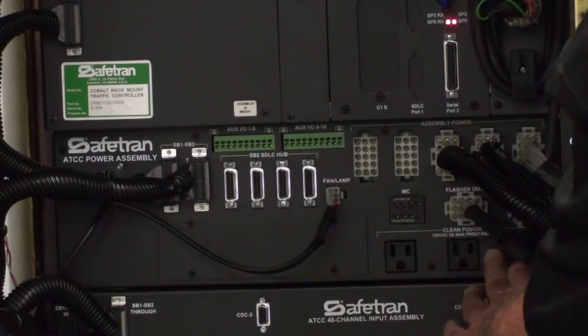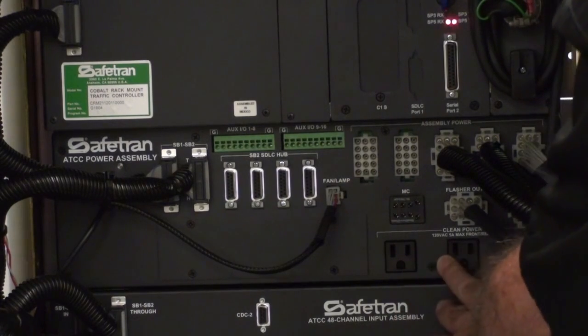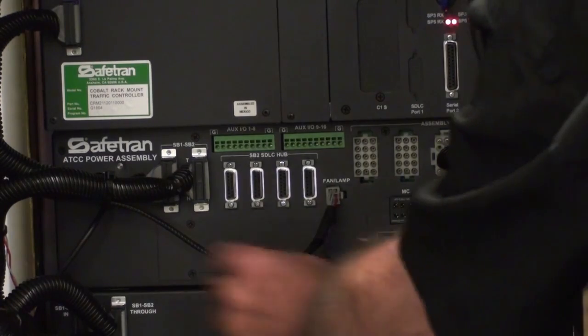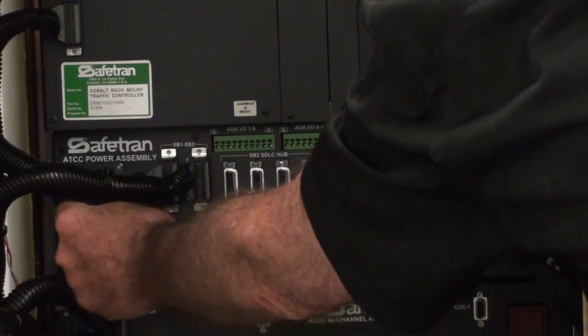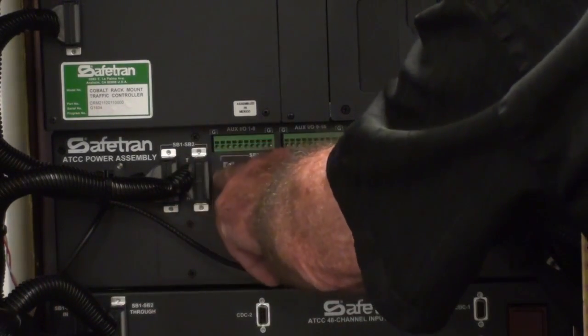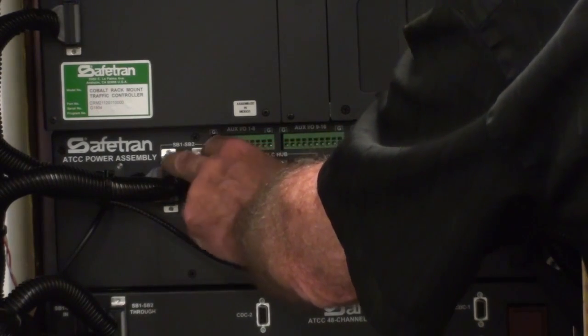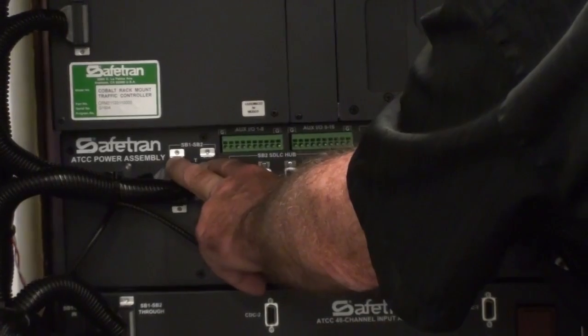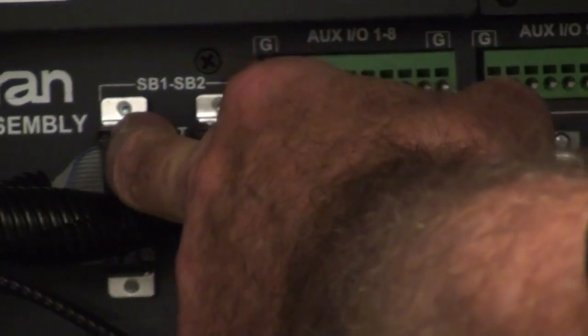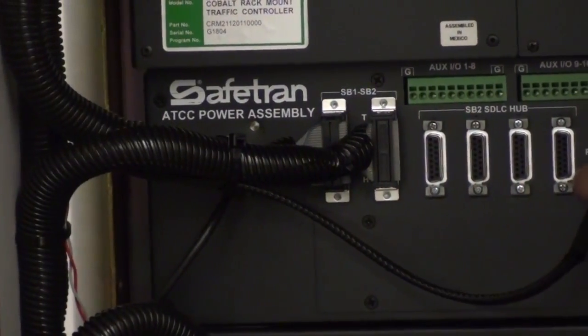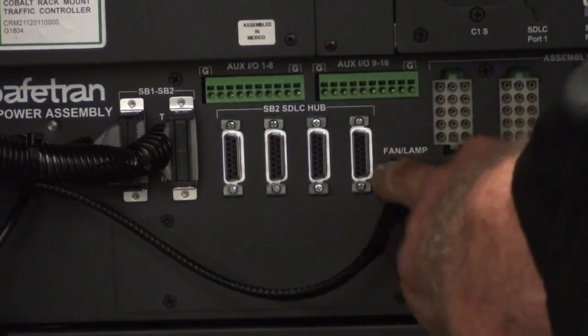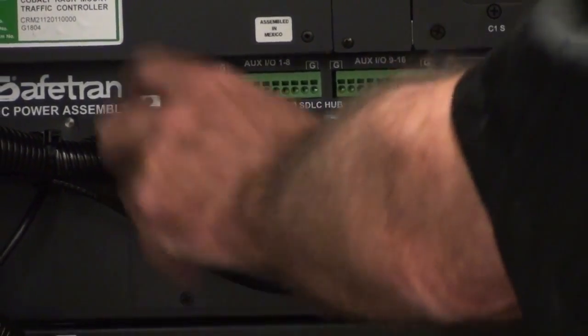Here are the three switched clean power outlets that were mentioned earlier. On the left side of the back panel is the Serial Bus 3 interface, which allows the CMU that's located in the output assembly to talk with the flasher. The Serial Bus 1 and 2 in-through connectors on each assembly enable the assemblies in the cabinet to be daisy-chained together without the need for a separate communications assembly. Here is the fan lamp assembly connector, providing power and serial communications to that assembly.